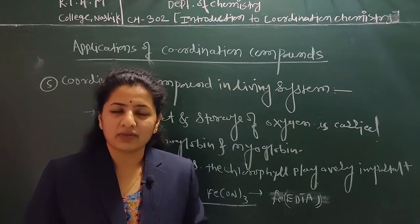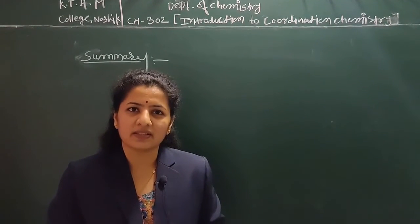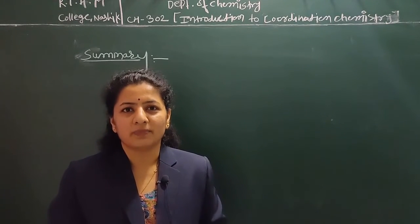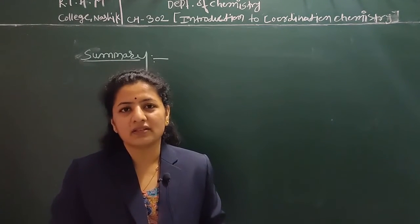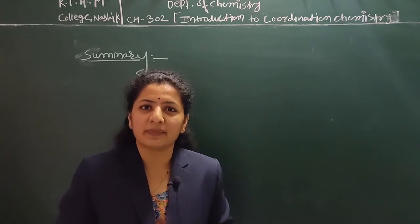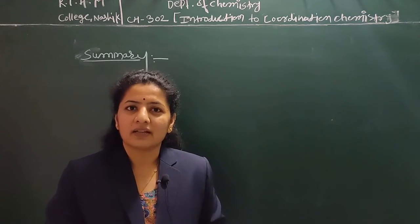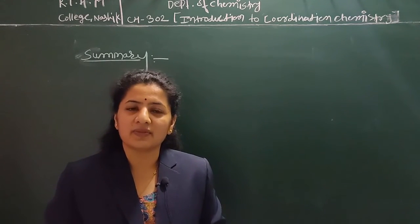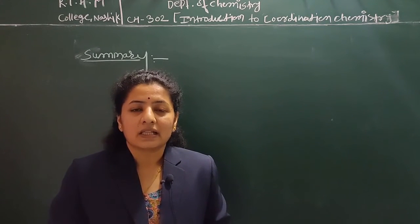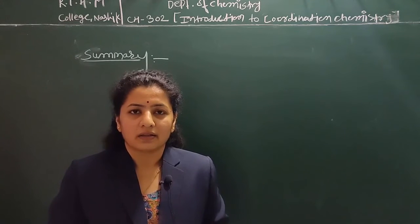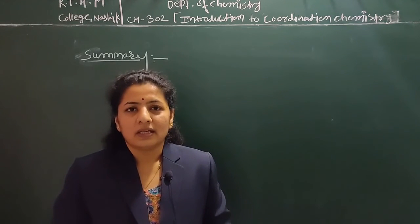In summary, we discussed an overview of the chapter. We covered the basic terms related to coordination compounds — ligand, central metal atom, coordination sphere, coordination compound, charge on the metal, and coordination number. We also discussed the types of ligands, the difference between metal chelates and metal complexes, and the difference between double salts and coordination compounds.